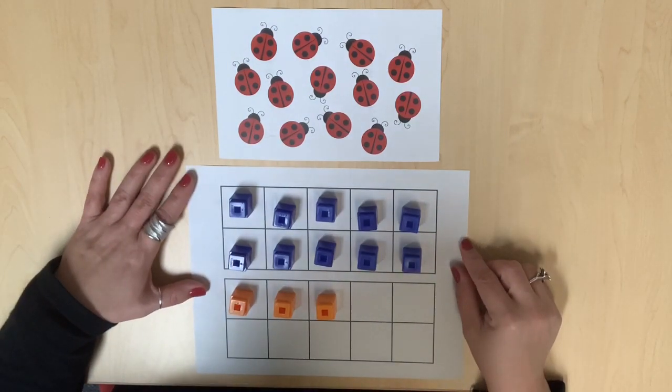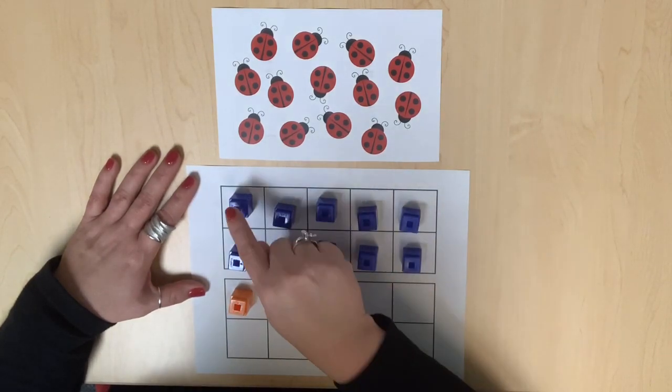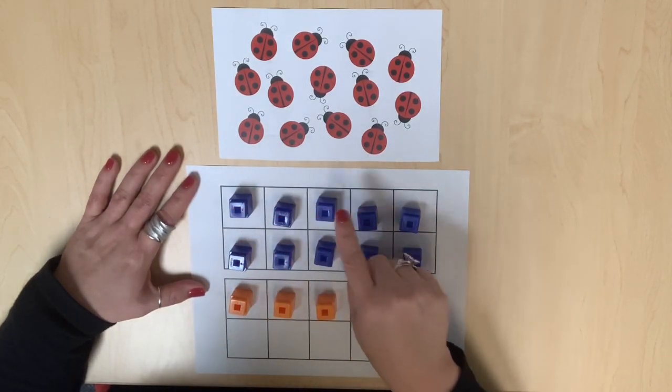Use the same set of counters and transfer them onto a double ten frame. While we can count one by one—one, two, three, etc.—